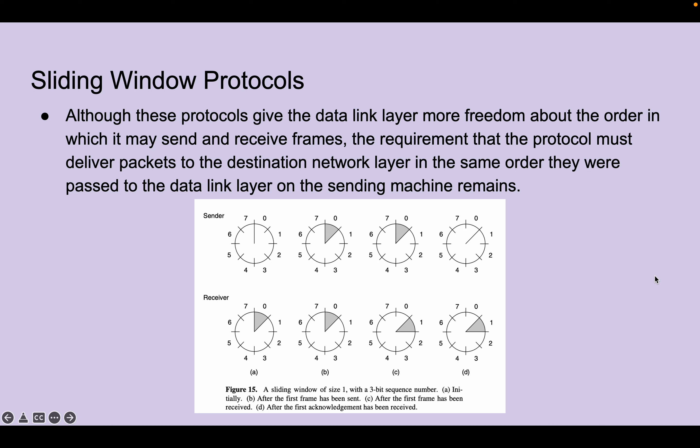Although these protocols give the data link layer more freedom about the order in which it may send and receive frames, the requirement that the protocol must deliver packets to the destination network layer in the same order they were passed to the data link layer on the sending machine remains.